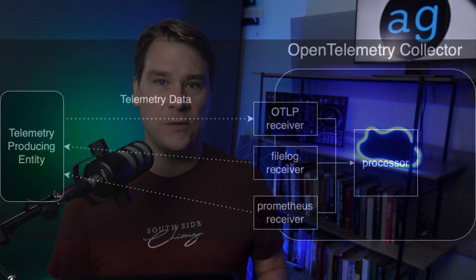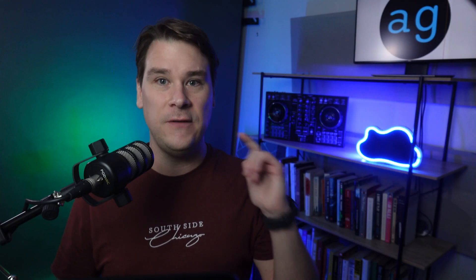Processors take data from those receivers and do something with it. For example, the batch processor takes telemetry data and batches it up — rather than sending 50 individual log lines to your backend meaning 50 round trips, the batch processor would place all 50 log lines and send them in a single batch. Another example is the log deduplication processor, which deduplicates identical logs in a given time span and adds a new field to the single log line indicating how many duplicates were removed. There are lots of processors available, and I will be digging deep into each one in future videos.